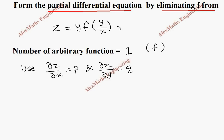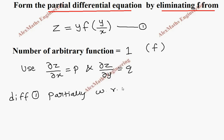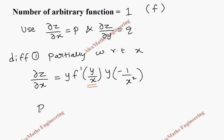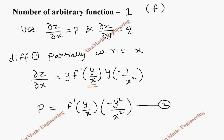Let's name the given equation as the first expression and differentiate it partially with respect to x. The left side becomes dou z by dou x. y is treated as a constant, so it is kept as it is. f derivative is f dash and the inner function is written as it is. By the chain rule, y is constant so it remains, and the derivative of 1 by x is minus 1 by x squared. Rearranging, p equals f dash of (y/x) multiplied by minus y over x squared. This is our second expression.